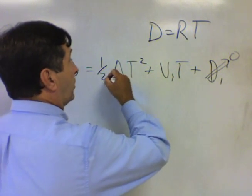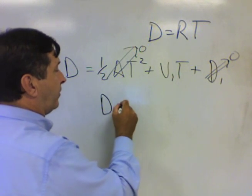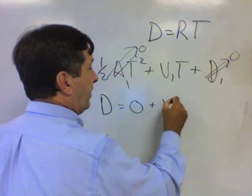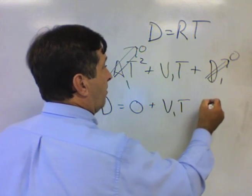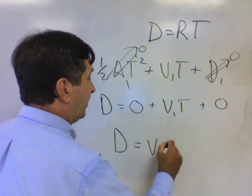So that's going to go to zero. That takes this whole section to zero. Therefore, this equation simplifies down to d equals zero plus v initial t plus zero. Distance equals v initial t.